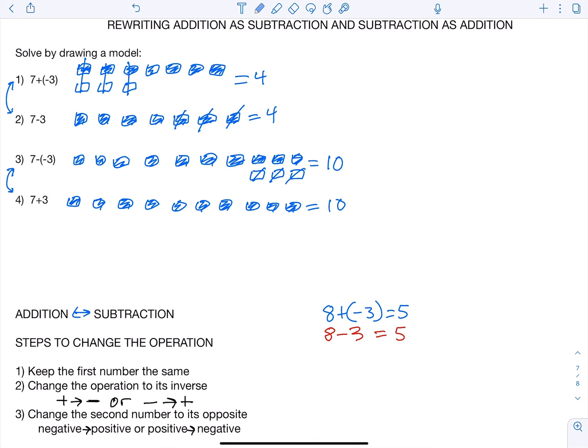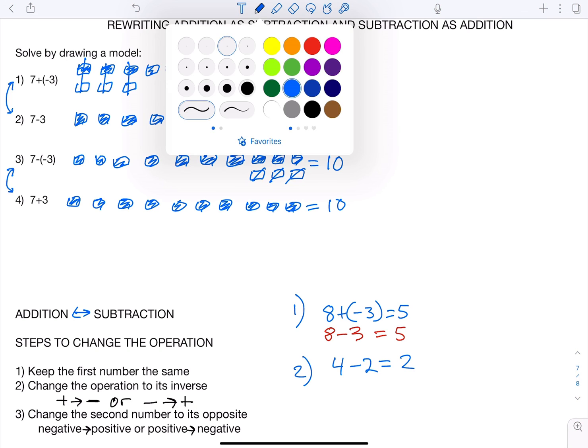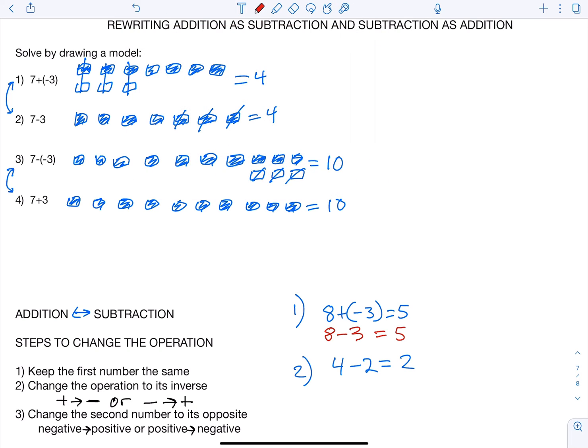If we want to do another quick example, I'll say that's example 1. Example 2, if I had something like 4 minus 2, we know that's going to equal 2 as an answer. But if we wanted to rewrite that as an addition problem, step 1, keep the first number the same. So 4 stays as 4.